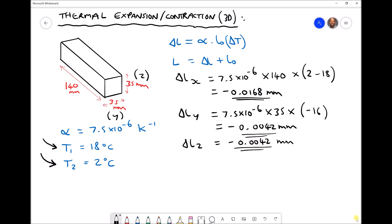So now we have our change in length in each direction. We can calculate our new length because the new length is the change in length plus the original length. Our length in the x direction is the change in length minus 0.0168 plus the original length of 140, giving us a new length equal to 139.9832.